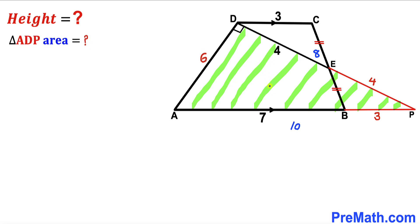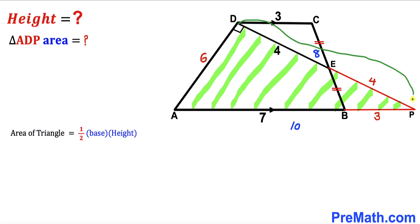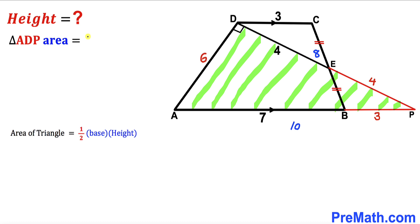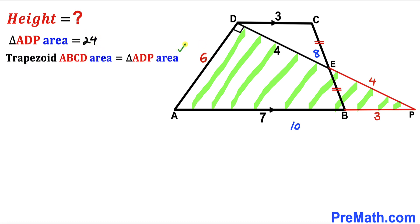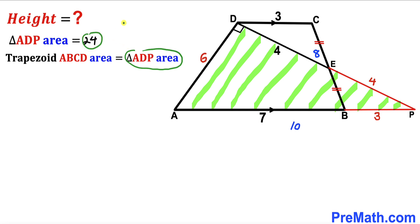Next, we calculate the area of right triangle ADP. Recalling the triangle area formula — area equals one half times base times height — side DP is the base and side AD is the height. So the area of triangle ADP equals one half times 8 times 6, which simplifies to 24 square units. Since the trapezoid area equals the triangle area, trapezoid ABCD has an area of 24 square units.